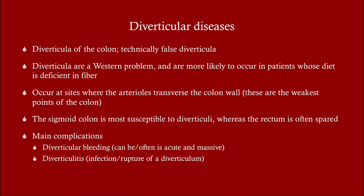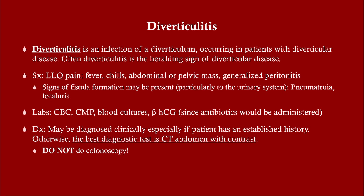Diverticular disease: diverticulosis is typically a consequence of a low-fiber diet. Diverticulosis itself is not so much of a problem — the problem is when one of those diverticula becomes infected, causing diverticulitis. The part of the colon most susceptible is the sigmoid; the rectum tends to be spared. The main complications of diverticulosis are diverticular bleeding, which can be significant and should be on your differential for bright red blood per rectum or hematochezia, and diverticulitis.